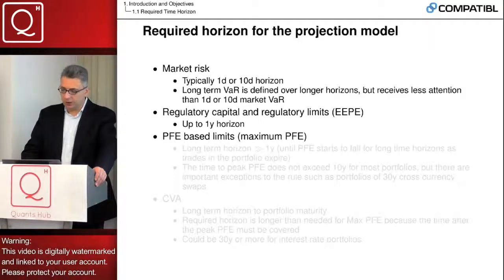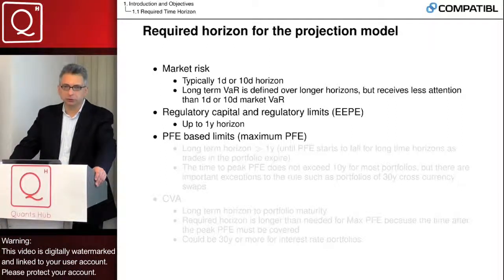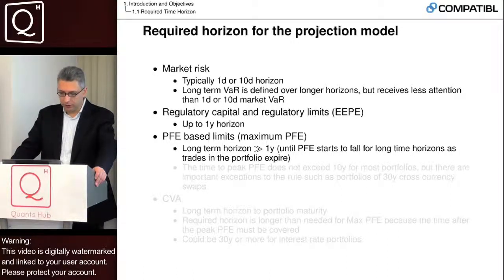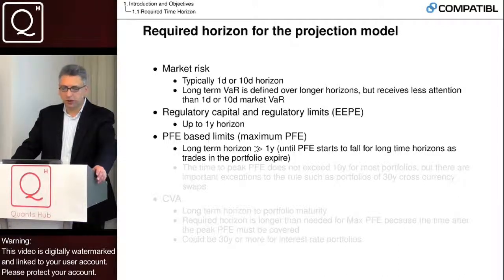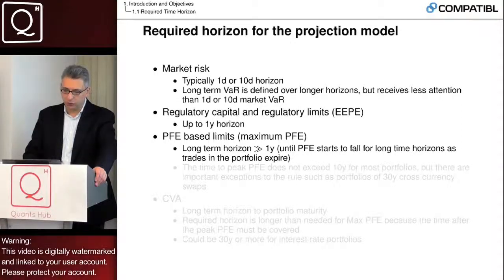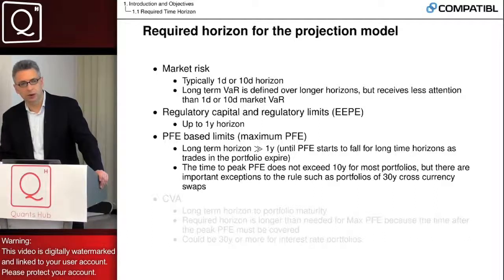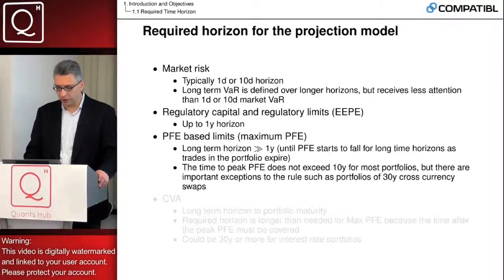PFE-based limits are similar, but defined on a longer horizon. Regulatory limits worry only about exposure up to a one-year horizon, computed using regulatory methods. PFE-based limits — potential future exposure based limits — are based on maximum potential future exposure for long-term horizons, typically much more than one year, defined where the PFE has a maximum. For a typical portfolio, PFE at a certain confidence level first grows and then decreases as more trades expire. Maximum PFE is the quantile of exposure at its peak, which normally does not exceed ten years, with some exceptions for long-dated cross-currency transactions.